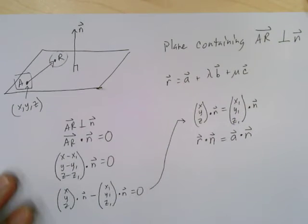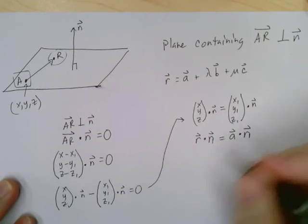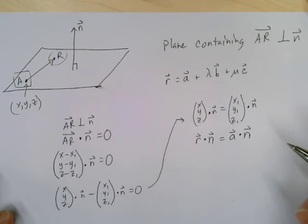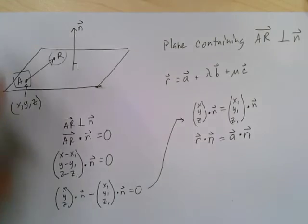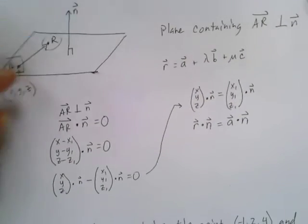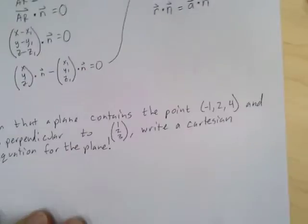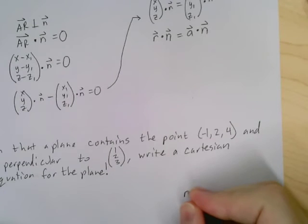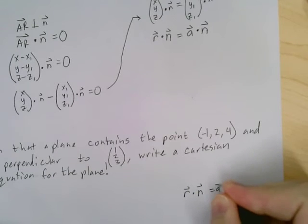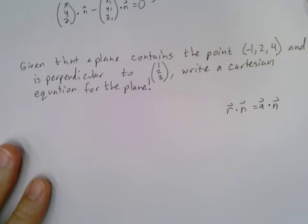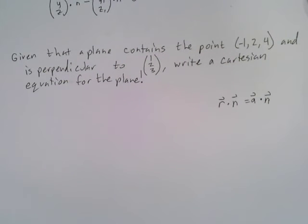And I understand, because it took me a while as well to get to the point where I really understood what was going on here and why we even care. So what I'm going to do is I'm going to show you an example. This is one of the times that showing you an example is going to show you why we even care about all of this. So I'm going to copy that down just right here. So R dot N equals A dot N. And let's look at the example that I've got here. Given that the plane contains the point (-1, 2, 4) and is perpendicular to such or such vector, write a Cartesian equation for the plane.